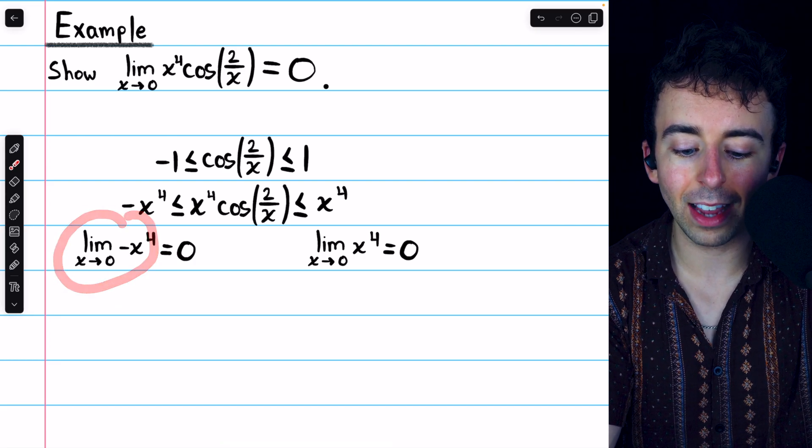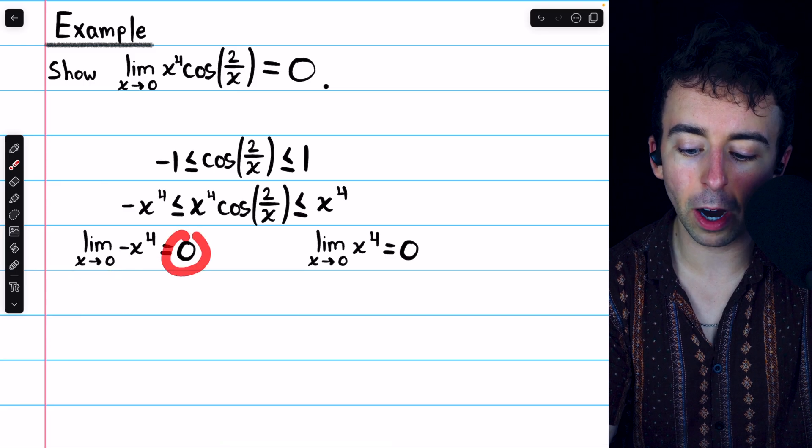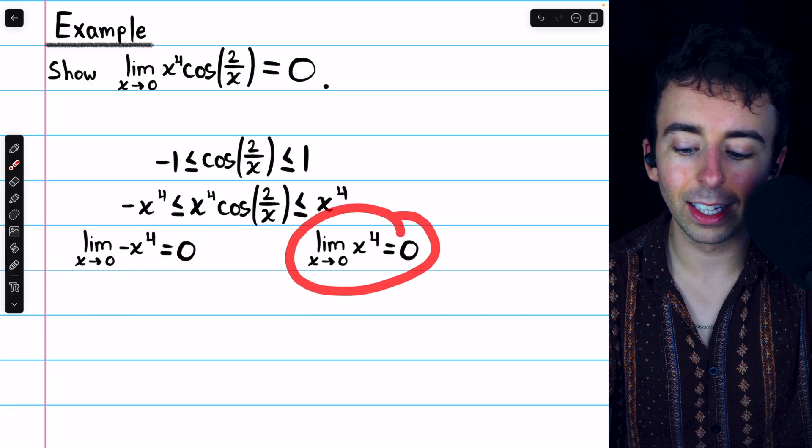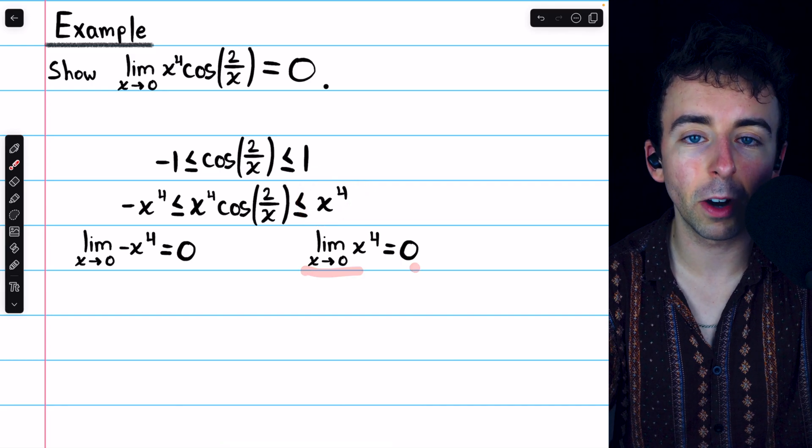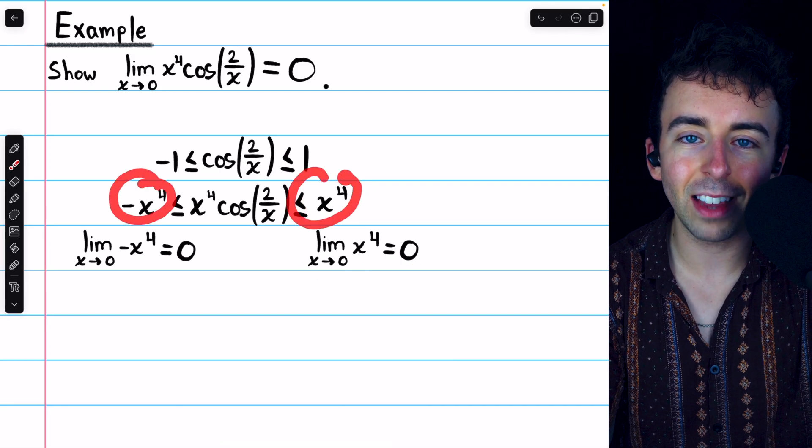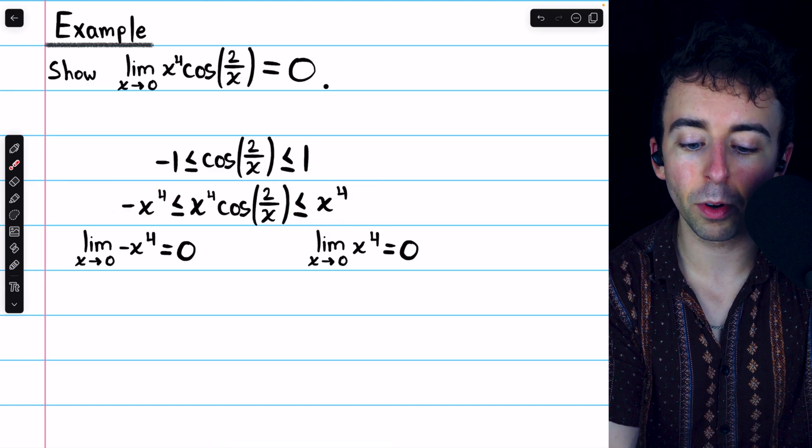So checking that, the limit of -x⁴ as x approaches 0 is 0, and same thing as the limit of the upper function. The limit of x⁴ as x approaches 0 is also 0.